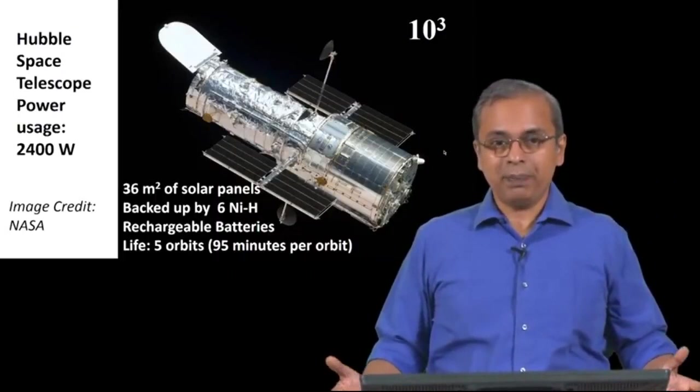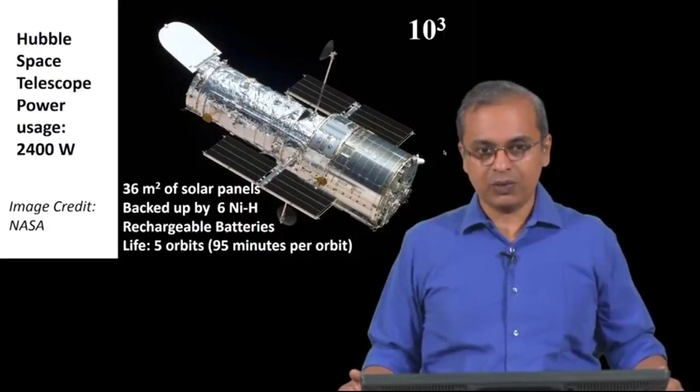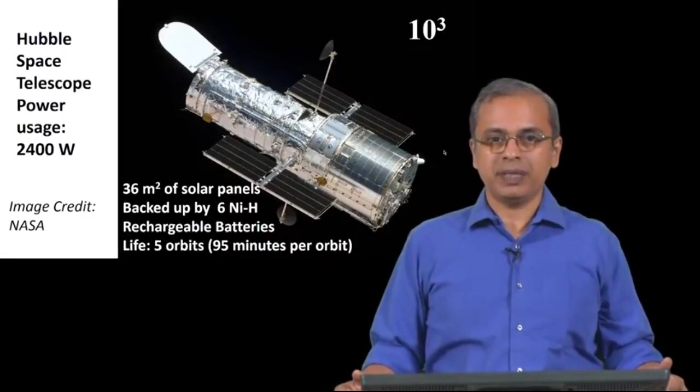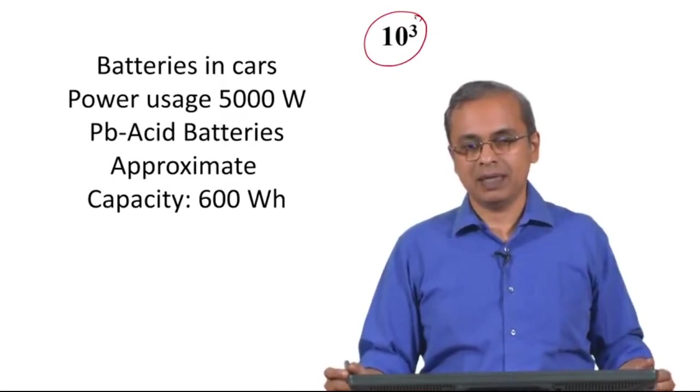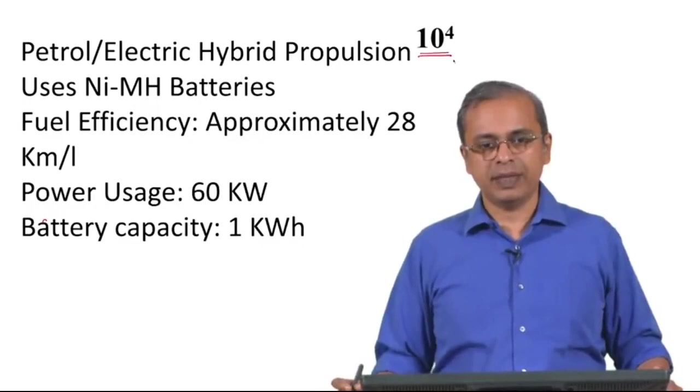The next scale of power usage, interestingly and fascinatingly, you go up from a few hundred watts to say a few thousand watts. At 2400 watts in this case, you are now dealing with the kind of power that is being used by the Hubble space telescope. Turn the ignition on the car, you are using the same amount of power as the Hubble space telescope.